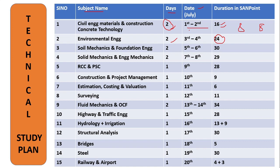If you are preparing on your own, concentrate on those topics and devote only two days. The next very important subject is Environmental Engineering, which is a 24-hour course in Sandpoint. The important topics are: water demand, water quality parameters, water treatment, distribution systems, sewage quality parameters, sewage treatment, sewage disposal, and air and noise pollution. Next comes Soil Mechanics and Foundation Engineering — your Geotechnical Engineering — a very high-weightage subject, again two days for that.